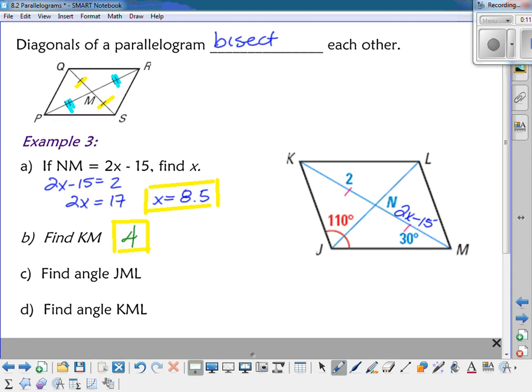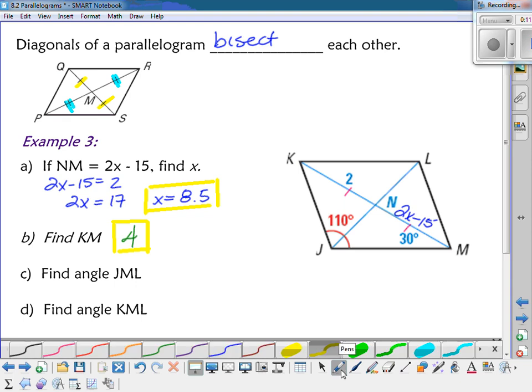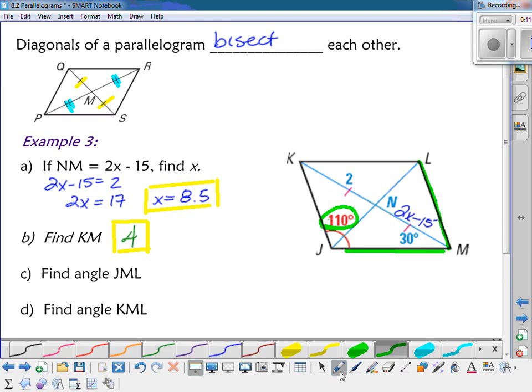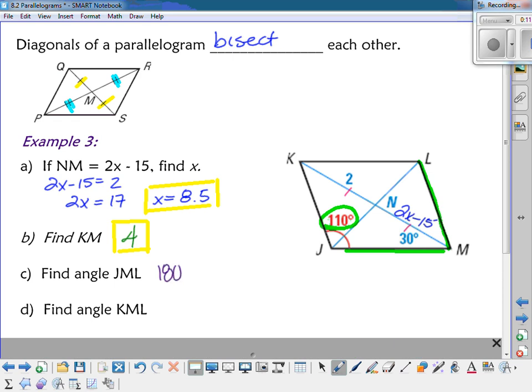Angle JML is talking about this angle right here, JML. And they gave me 110 for that whole angle KJM. So because I know those two have to add up to 180, I can just take 180 and subtract 110. And I know that angle JML would then be 70 degrees.